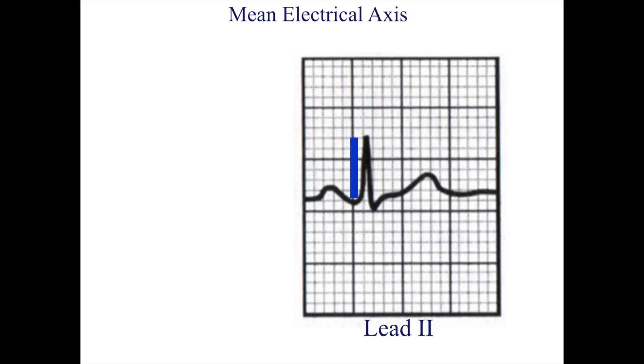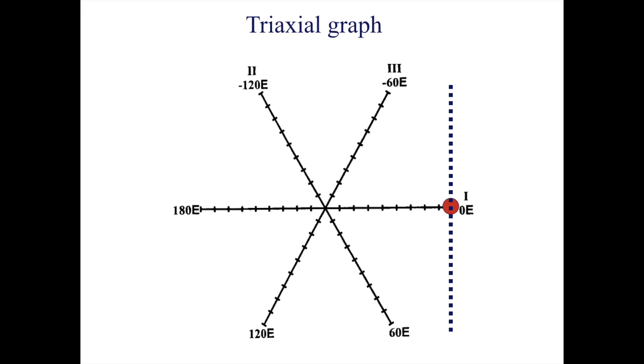Now for the second lead. Here the positive aspect is 6 above the zero and the negative aspect is 1 below. So 6 minus 1 is 5, and that is the number we'll plot on the graph. This time we'll plot the number on the axis corresponding with lead 2 and again draw a perpendicular line through it.